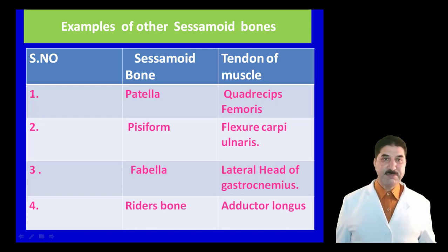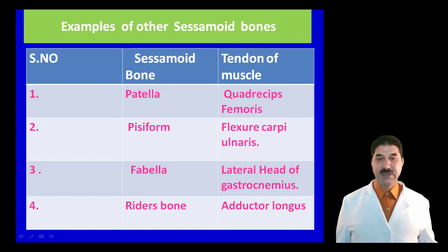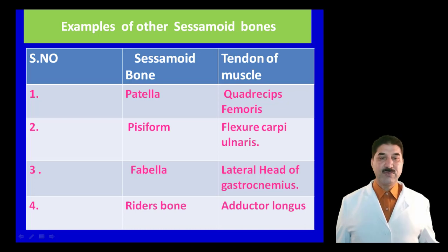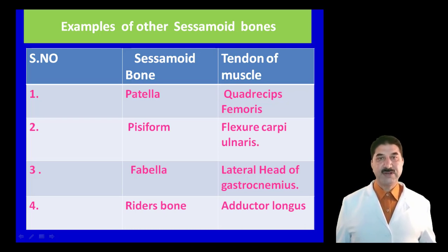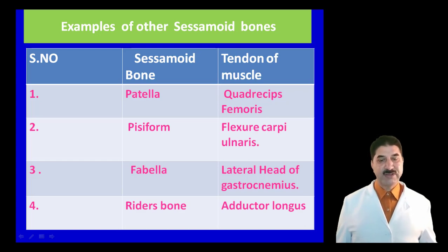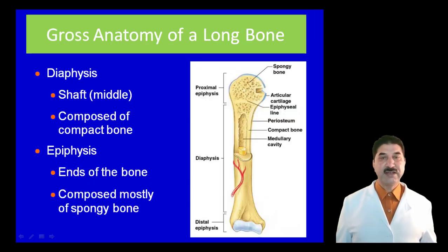Some examples of sesamoid bones and their locations: the patella is found in the tendon of quadriceps femoris; the pisiform is found in the flexor carpi ulnaris; the fabella is found in the lateral head of gastrocnemius; and the rider's bone is found in the adductor longus.